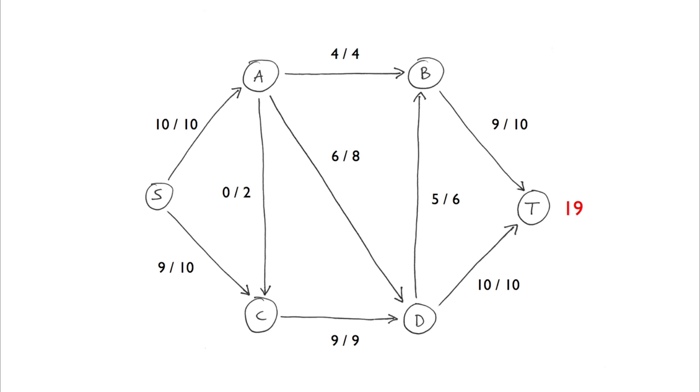Don't be worried if you chose different paths than I did. That's perfectly fine, just make sure you end up with the same flow of 19. When you code this algorithm, you'll likely use depth first search at each iteration to find your paths.